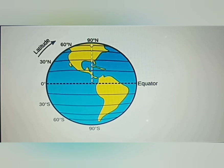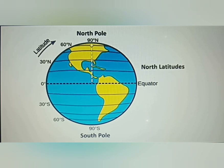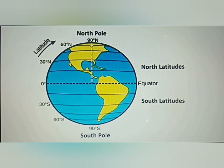90 degree north latitude marks the North Pole and 90 degree south latitude marks the South Pole. All parallels north of the equator are called north latitudes. Similarly, all parallels south of the equator are called south latitudes. The value of each latitude is followed by north or south, or by using the letters N or S.